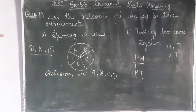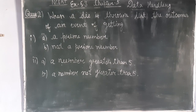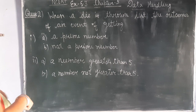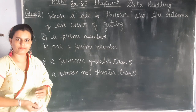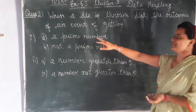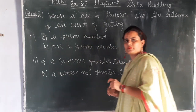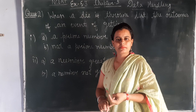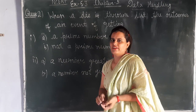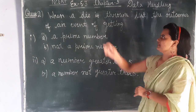Now come to our question second. The second question says that when a die is thrown, list the number of an event — getting a prime number, a composite number, a number greater than five. Your today's question is: write about what is an event, what are prime numbers and composite numbers. You can list your prime numbers and composite numbers in the comment box.